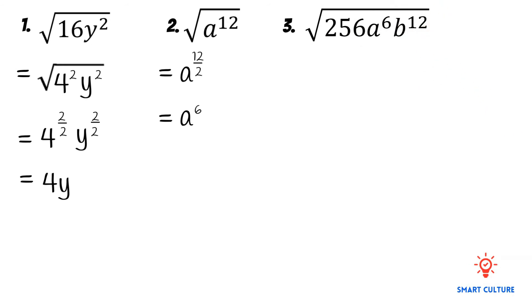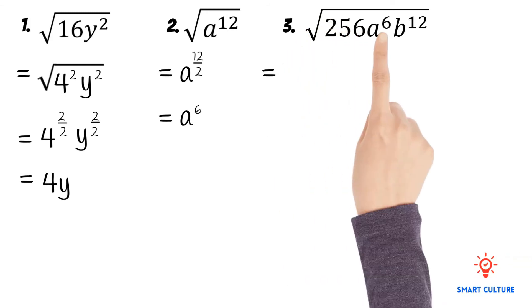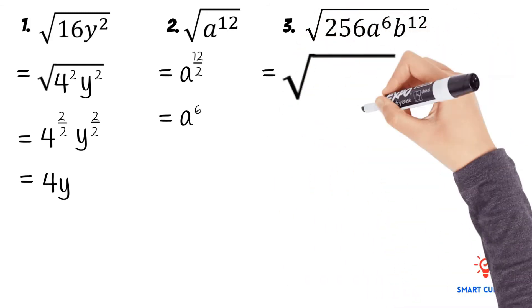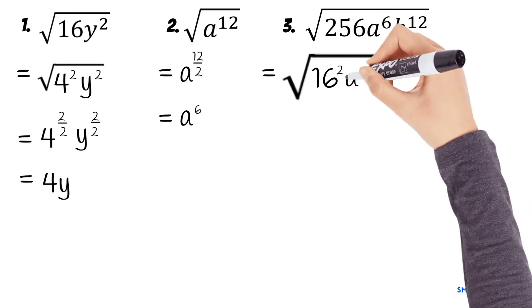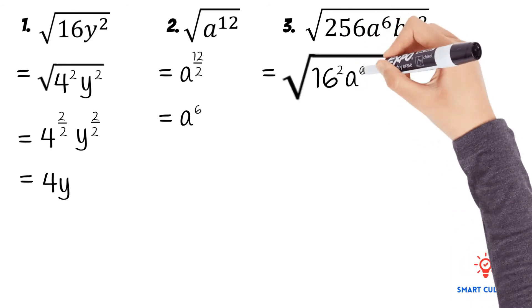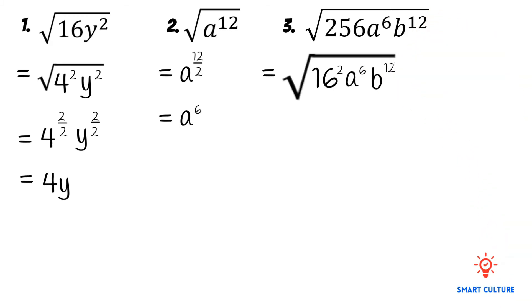Let's take a look at the last example. Here we have the square root of 256, a to the power of 6, and b to the power of 12. We'll write the number 256 as a product of its factors. So we write 16 squared. Remember, 16 times 16 is equal to 256.